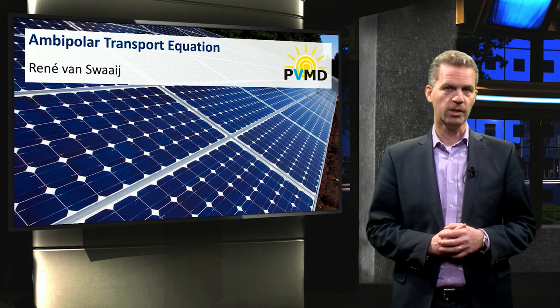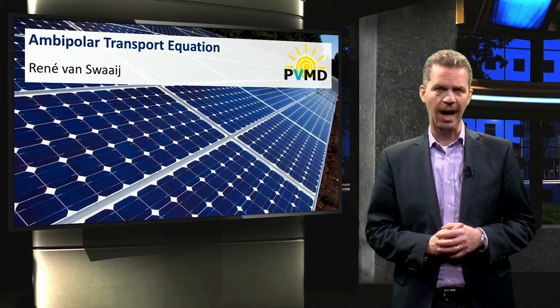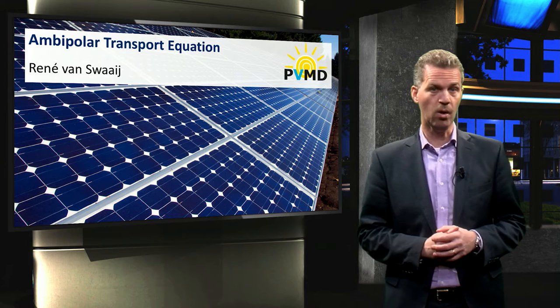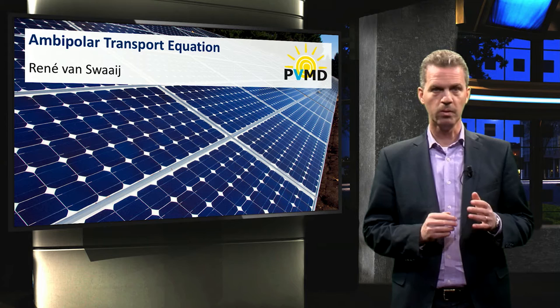It is hard to keep track of charge in a solar cell. Generation, recombination, and spatial movement are all occurring at the same time. How can we keep track of all these processes? Well, it all comes down to one equation.